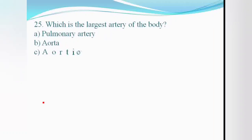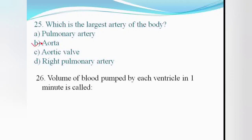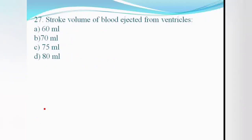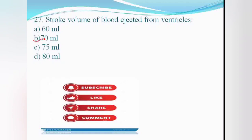The smallest artery is arterioles. The largest artery of the body is the aorta. The volume of blood pumped by each ventricle per minute is called cardiac output.